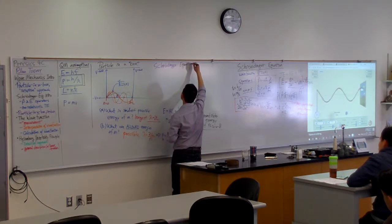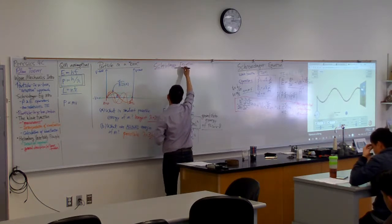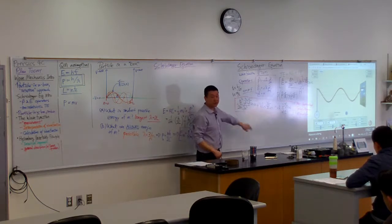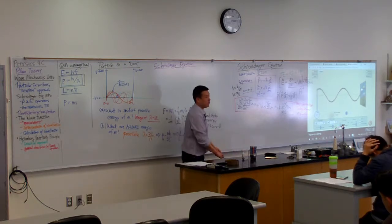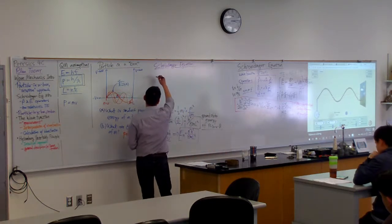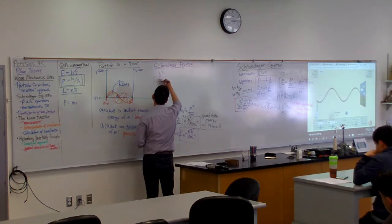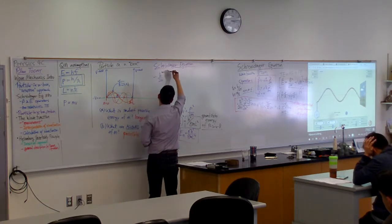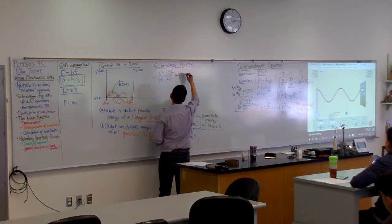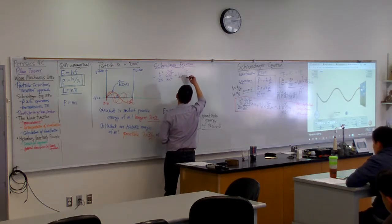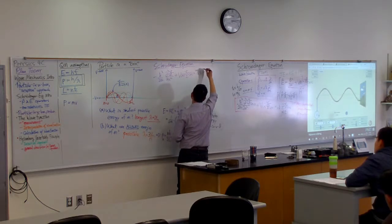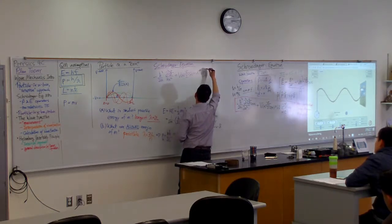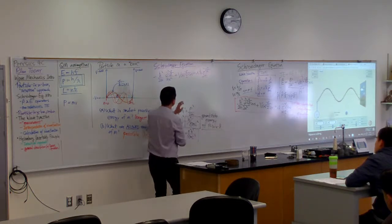Schrödinger equation. I'll start with the full expression and cancel out whatever happens to be zero. The full Schrödinger equation is: minus ℏ² over 2m times the double position derivative of ψ, plus V(x)ψ(x), equals iℏ times the single time derivative of ψ. That's the Schrödinger equation.